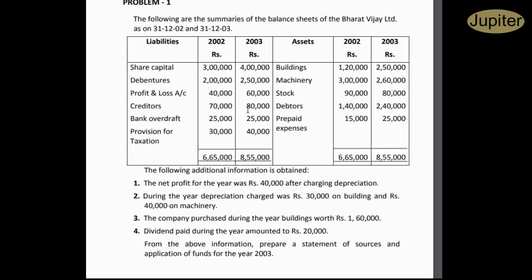This is the application of funds. Machinery is 3,000,000. Depreciation is a non-cash expense — that means cash outflow is not there, so we have to add it back to profit. Stock is 90,000 and 80,000. Debtors is 140,000 and 240,000 — this is an increase in working capital.